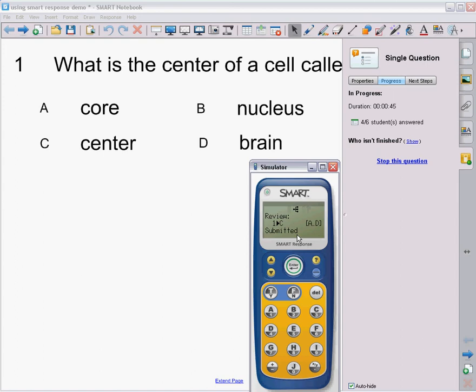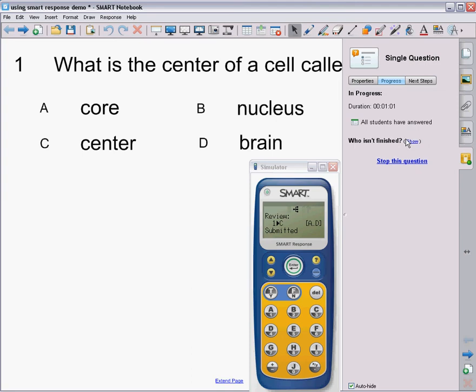Right now, over on the side, I can see that all students have answered. I have six remotes signed in and all students have answered. It even has a timer that tells me how long it's taken. Right now, we can't see who isn't finished because all students have finished. And your students don't have identifications yet, so it would just say anonymous.